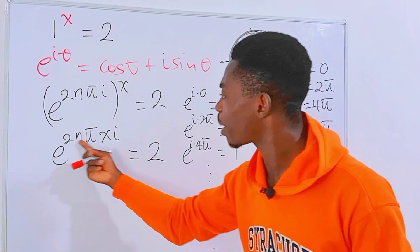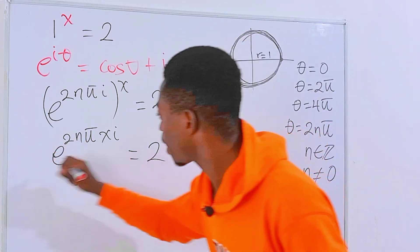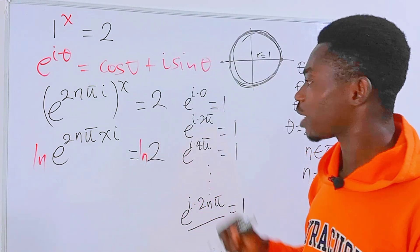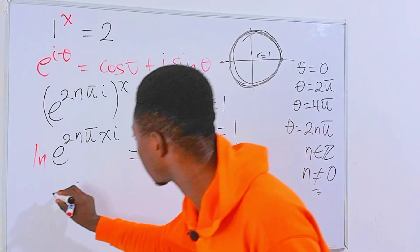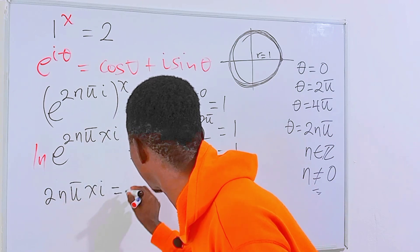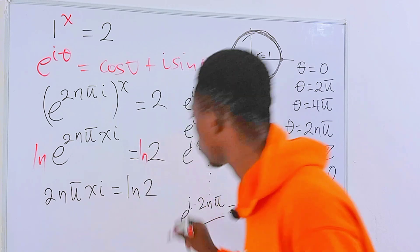Now let's go ahead and drop the power down by introducing ln on each side of the equation. And if you do that, you're going to end up getting 2nπxi equals ln of 2.